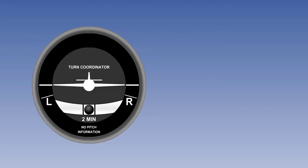Uncoordinated flight exists when the aircraft is sideslipping, and indication to the pilot of sideslip is given by the inclinometer portion, the ball, of the turn coordinator.